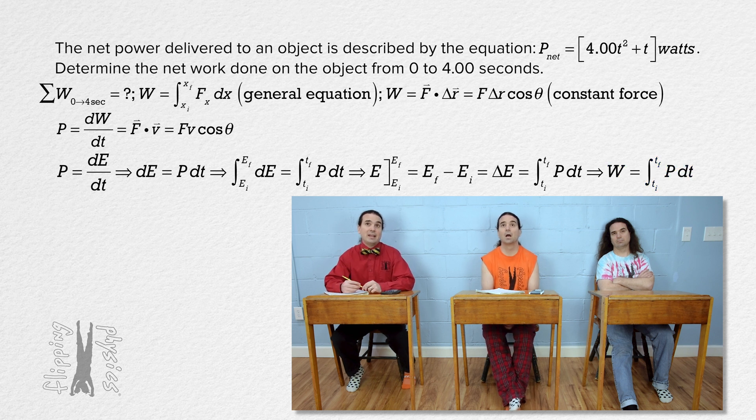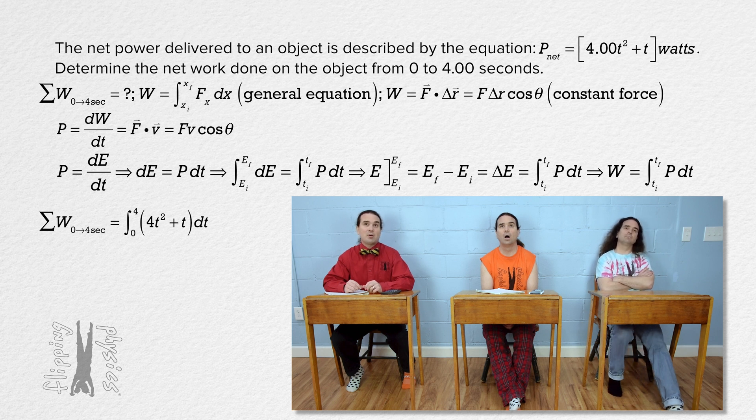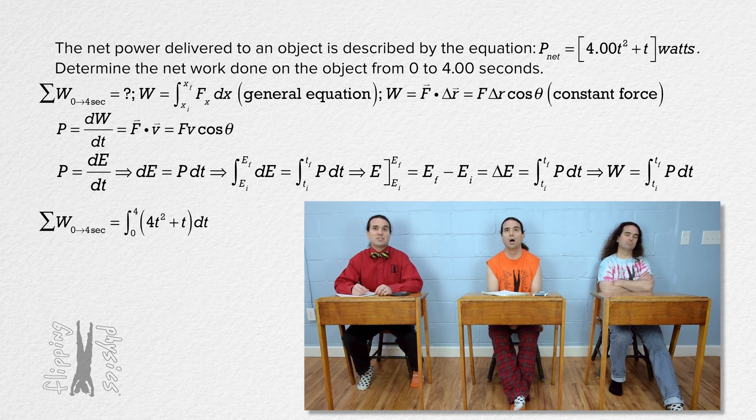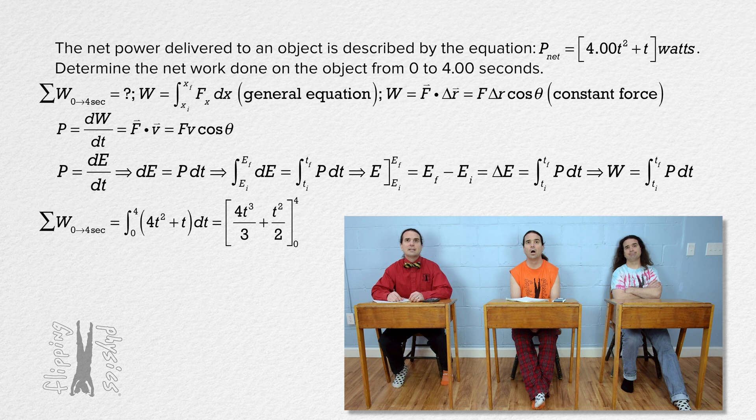And now we can plug in everything we know. We get the network from 0 to 4 seconds equals the integral from 0 to 4 seconds of the quantity 4 times time squared plus time all with respect to time. That integral equals, well, 2 plus 1 is 3, so 4 times time cubed divided by 3 plus 1 plus 1 is 2, so time squared over 2. Do not forget the limits. Oh, right. From 0 to 4 seconds.